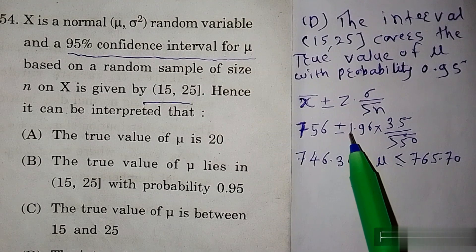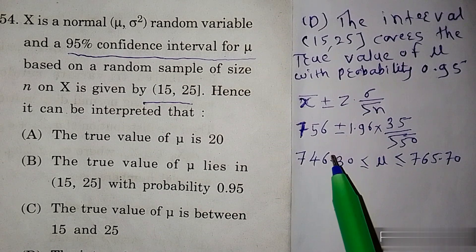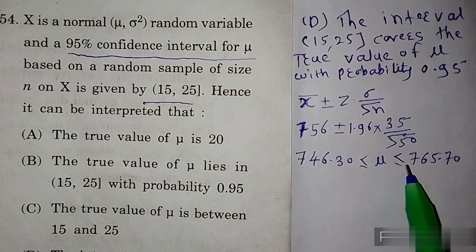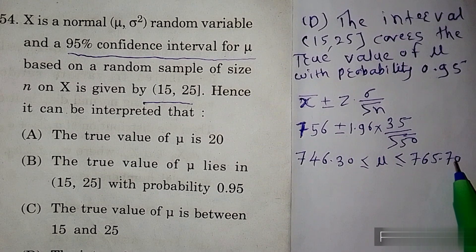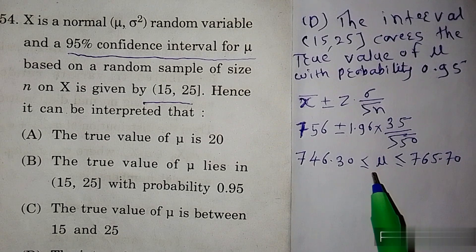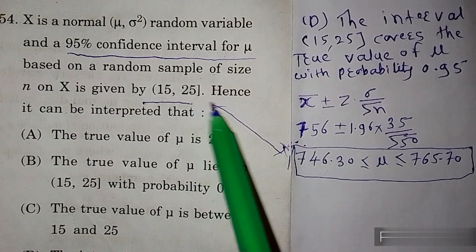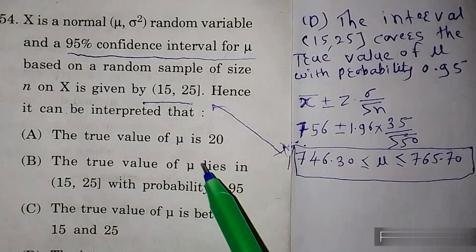Plus minus से पहले minus का calculation: less than or equal to mu less than or equal to plus का calculation। 765 minus 70 आए — यहाँ लिखना है। हम देख सकते हैं कि mu यह इस interval में है, और यह दो interval दिखाते हैं।